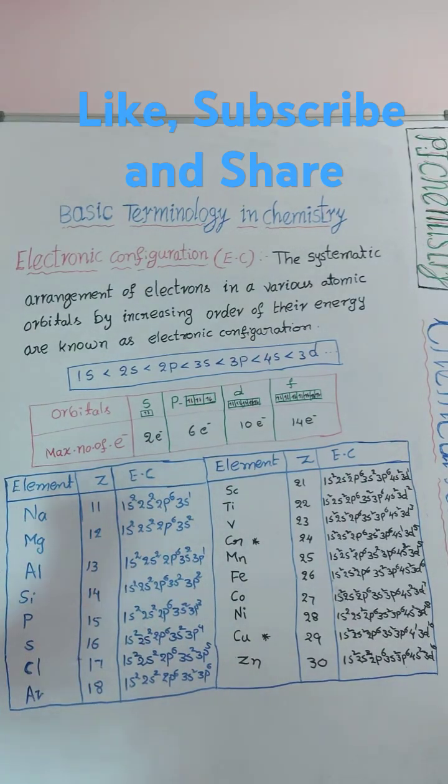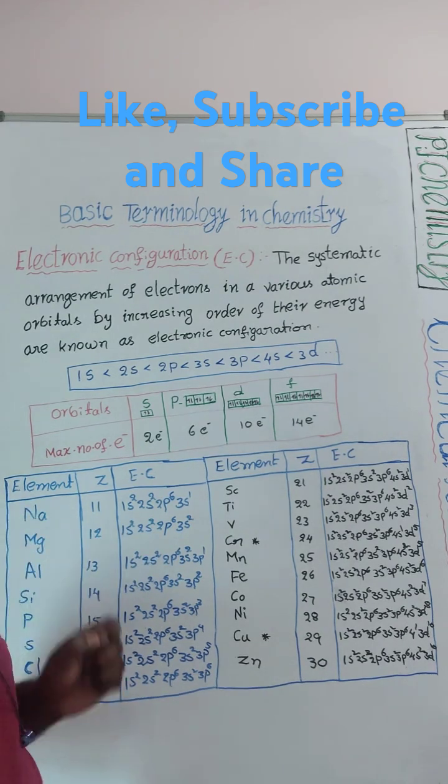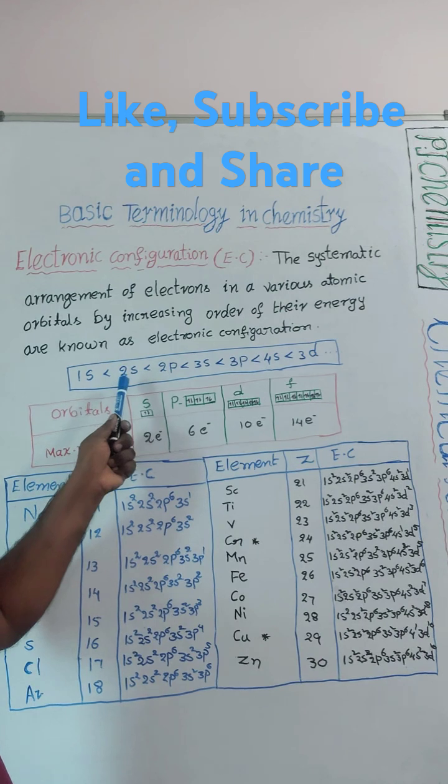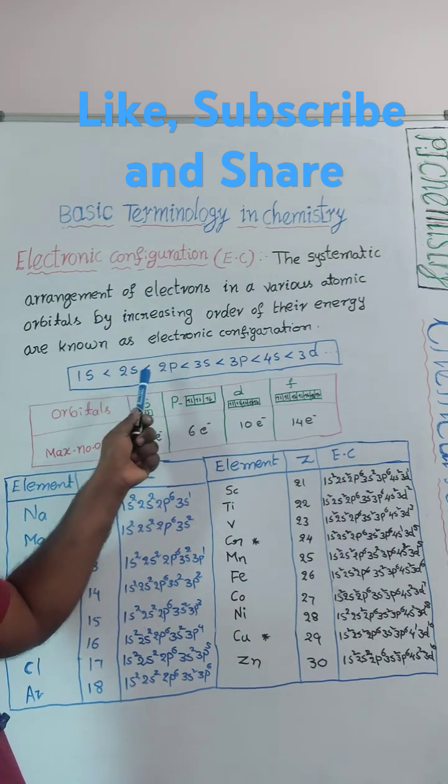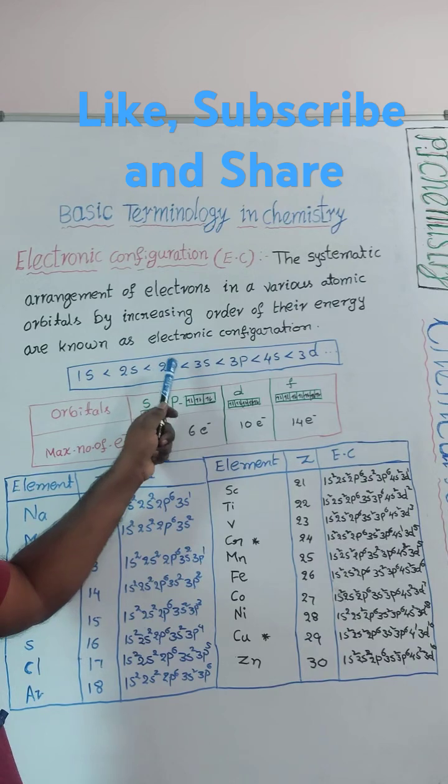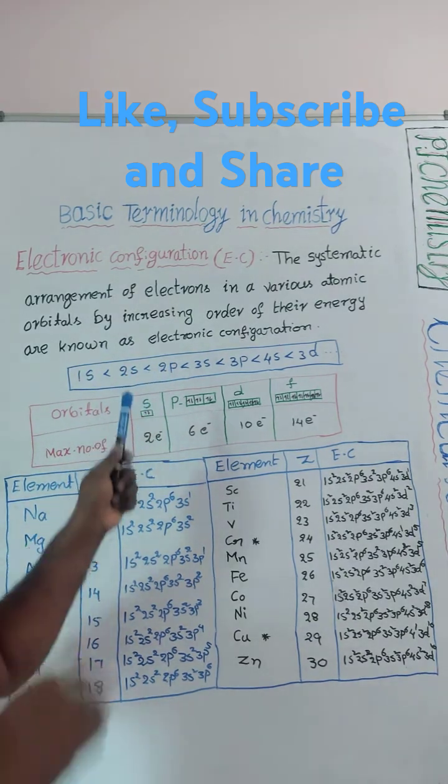Now see here, how to fill electrons. For example, sodium. Sodium atomic number 11, 11 electrons are there. 1s 2 electrons, 2s 2 electrons maximum, 2p means maximum 6 electrons. 6 plus 2 plus 2 total, until 2p, 10 electrons over.